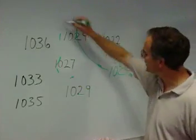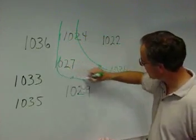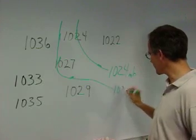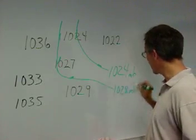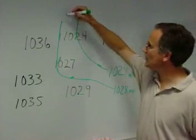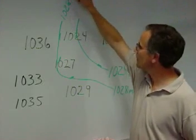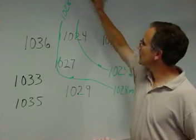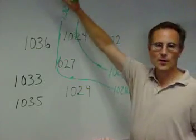It's going to look like this. 1,028 millibars. And when you get to the top, you have to extend the line off the map because there's no points up here.